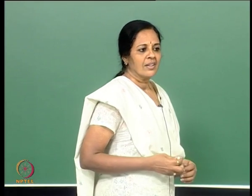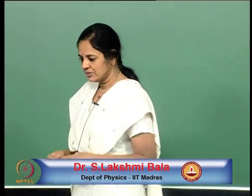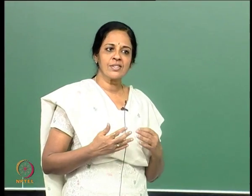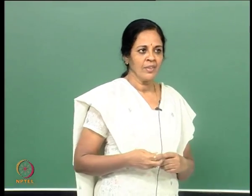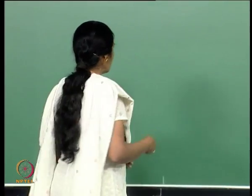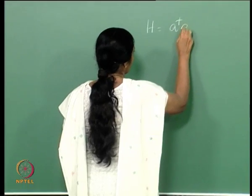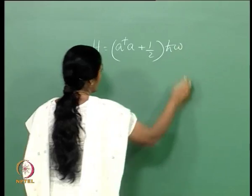In the last lecture, I gave an introduction to the linear harmonic oscillator. We showed that operators called a and a dagger can be constructed for the linear harmonic oscillator, and these operators raise the energy levels. Basically, I had the Hamiltonian for the oscillator given by a dagger a plus half h-cross omega.